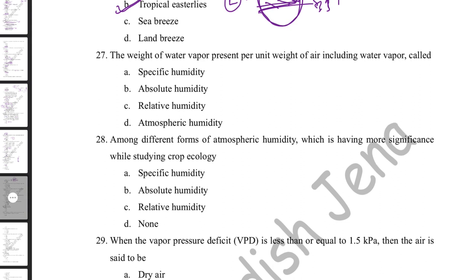The weight of water vapor present per unit weight of air (including water vapor) is called specific humidity. Absolute humidity is the weight of water vapor per unit volume of air. Relative humidity is the proportion of water vapor present relative to what is needed to saturate the atmosphere — and relative humidity is most significant for crop production and crop ecology.